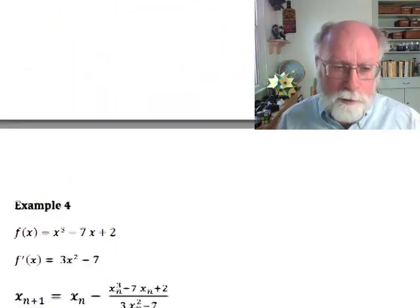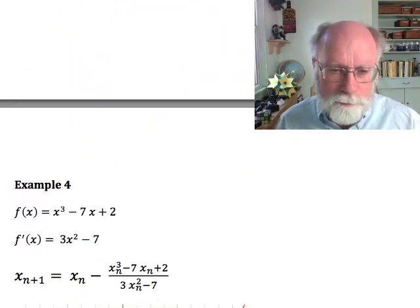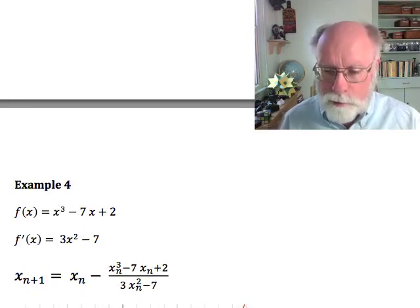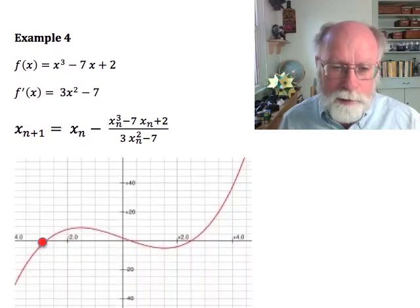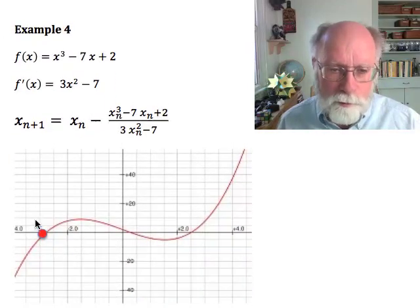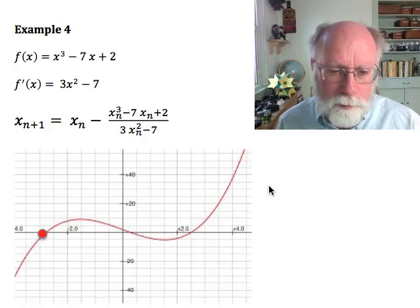I'll show you one other thing which can happen. We're back to our original cubic. We're setting up our Newton's quotient iteration again, and I'm going to talk about the red root. And this is the same red root that we had before.